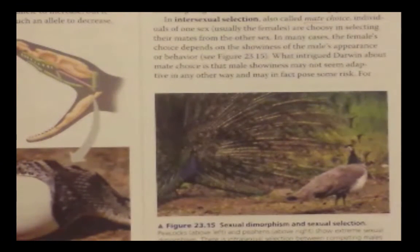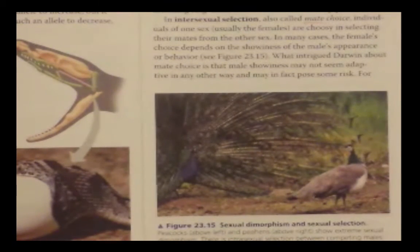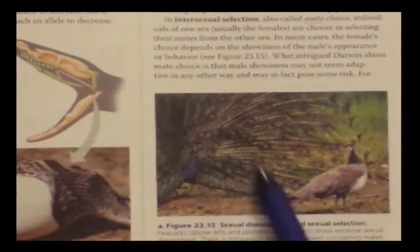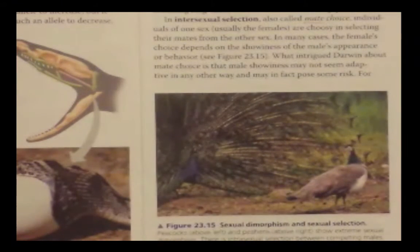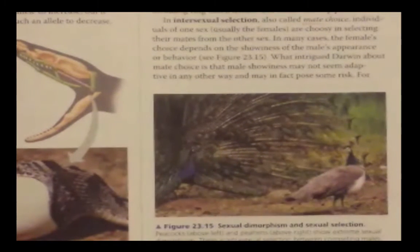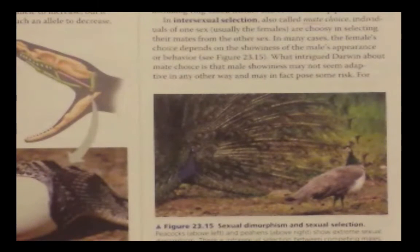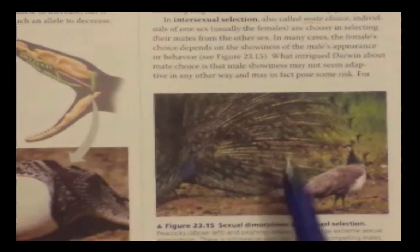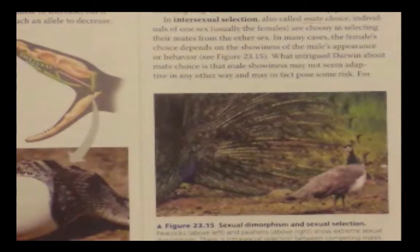This is a good example of how we might not always be able to predict what the most fit organism is. Sure, there may be a brown peacock around that won't be eaten as easily, but it's also not going to be very successful at passing on its genes.